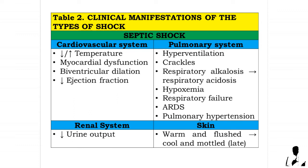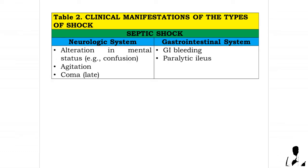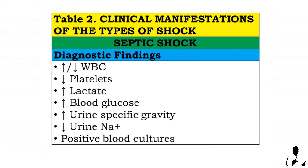Skin: warm and flushed, that may lead to cool and mottled skin as a late sign. Neurologic system: alteration in mental status — for instance, confusion, agitation, and coma as a late sign. Gastrointestinal system: gastrointestinal bleeding and paralytic ileus. Diagnostic findings in septic shock: